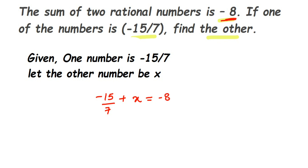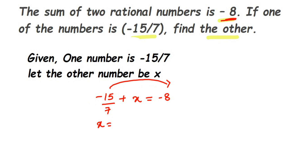Now we have to find the value of X, so we're going to transpose this number to the other side. Remember, when transposing, you should transpose the whole number. -15/7 is a single number, so transpose the whole number to the other side. The sign will change — negative becomes positive — so X will be equal to -8 plus 15/7.